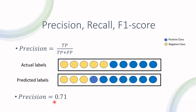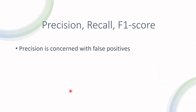In this example, we have two negatives that are falsely predicted as positive, and that changes the false positives from zero to two. The precision drops from one to 0.71. So we can say that precision is more concerned with false positives.